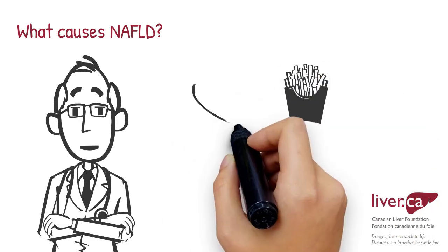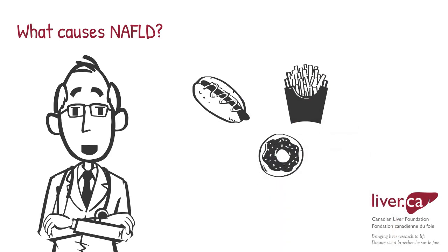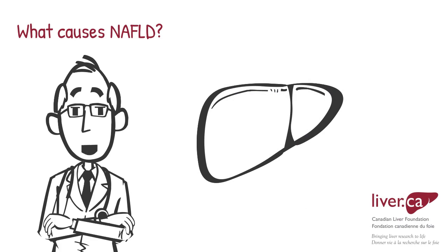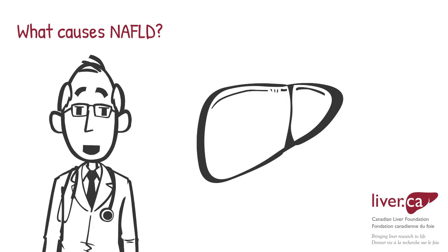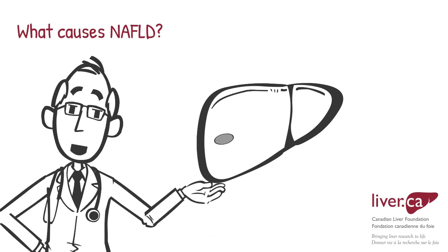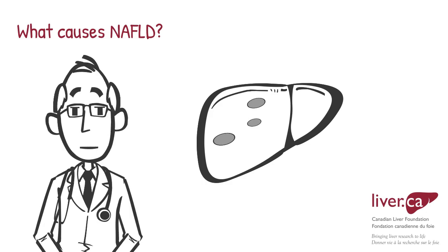NAFLD typically develops when a person consumes more sugar and fat than their body can handle. Sugar and fat from a person's diet are usually broken down by the liver and other tissues. If the amount of simple sugar or fat intake exceeds what is required by the body, the sugars and fat from foods are converted to fat in the liver and stored as fatty tissue. This production of fat in the liver is unrelated to alcohol or viral causes.